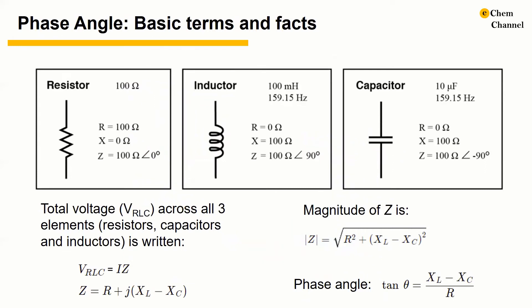The impedance phase angle for any component is the phase shift between the voltage across that component and current through that component. A component can be a resistor, an inductor, and a capacitor.